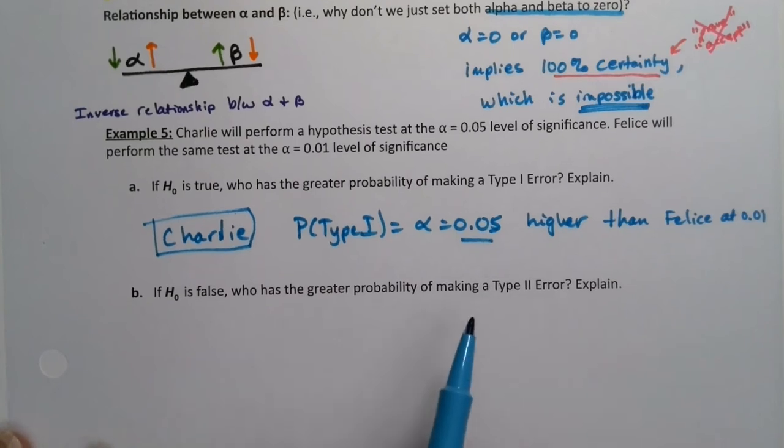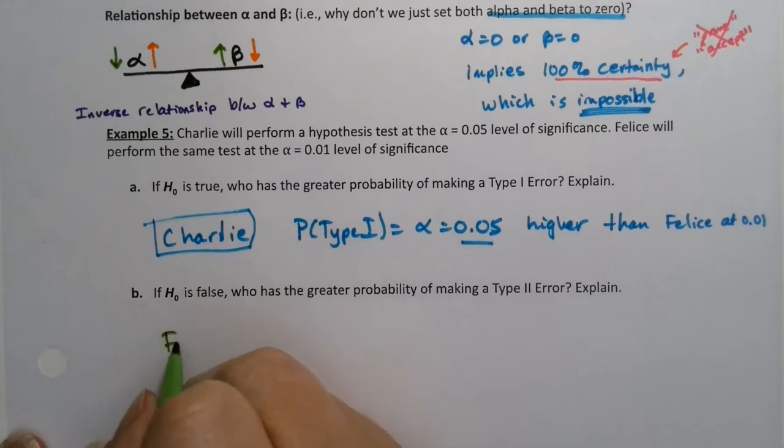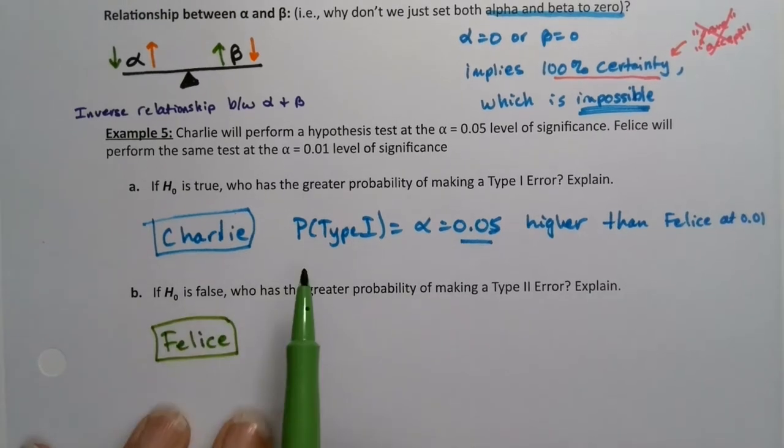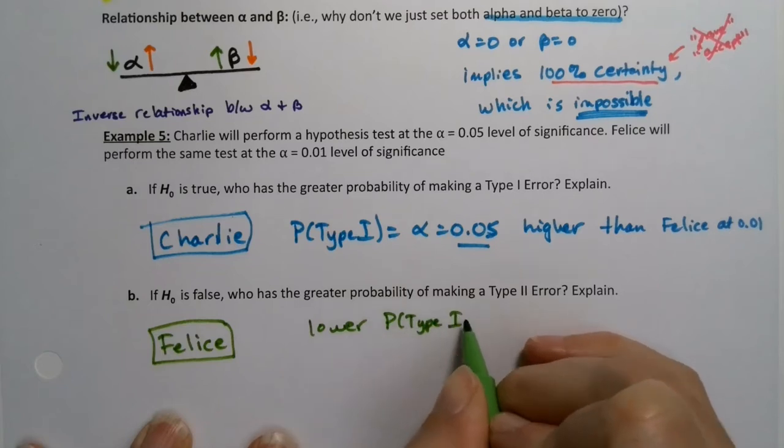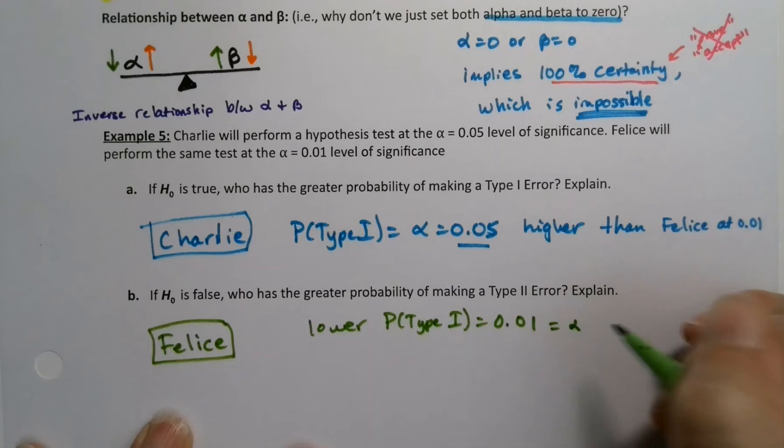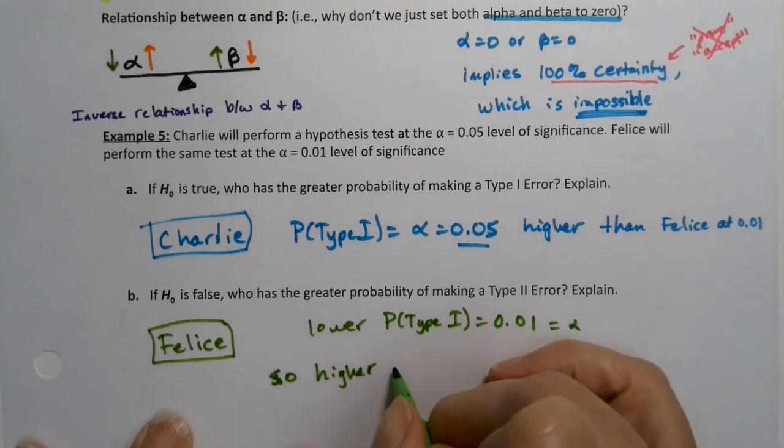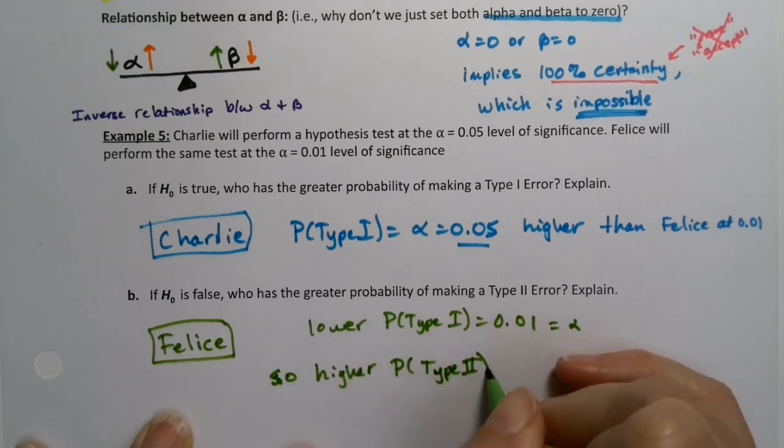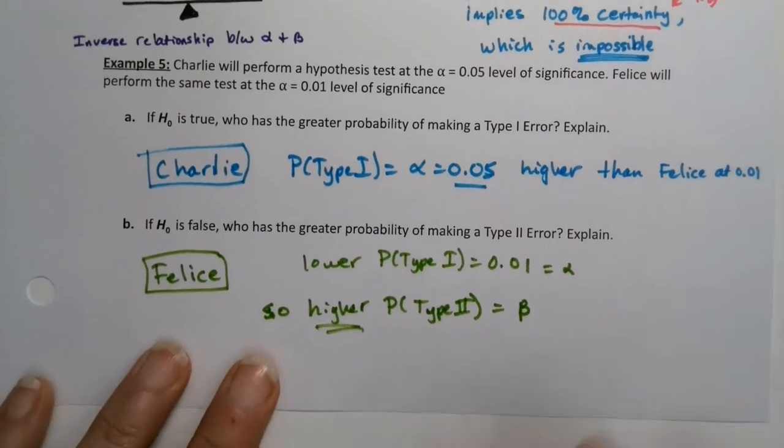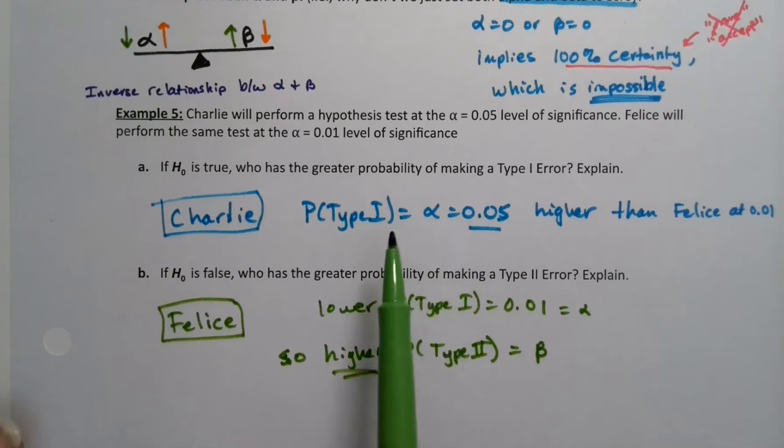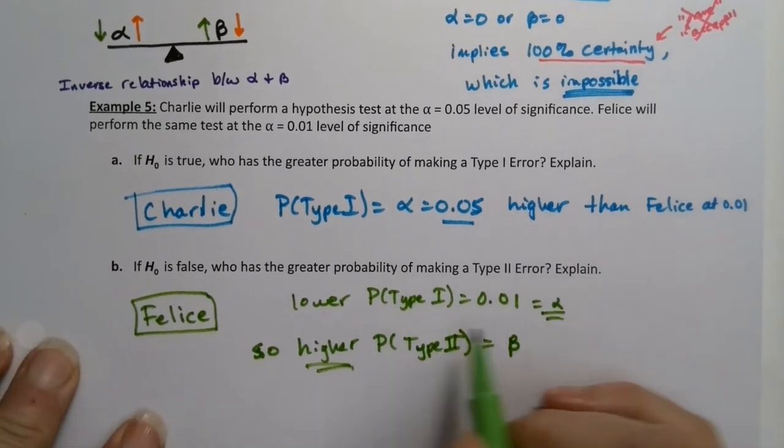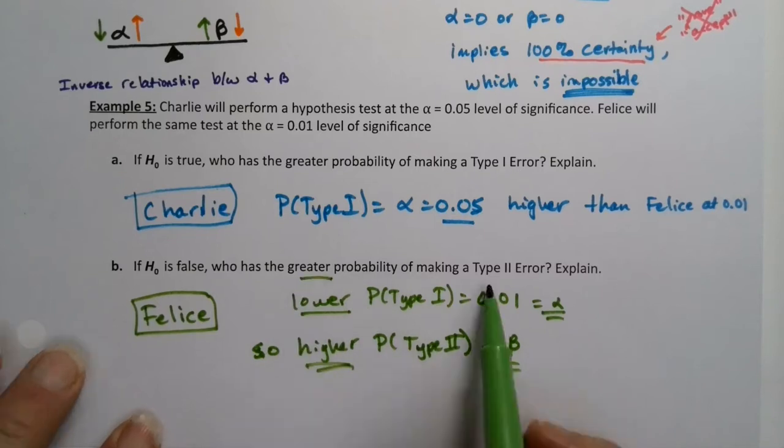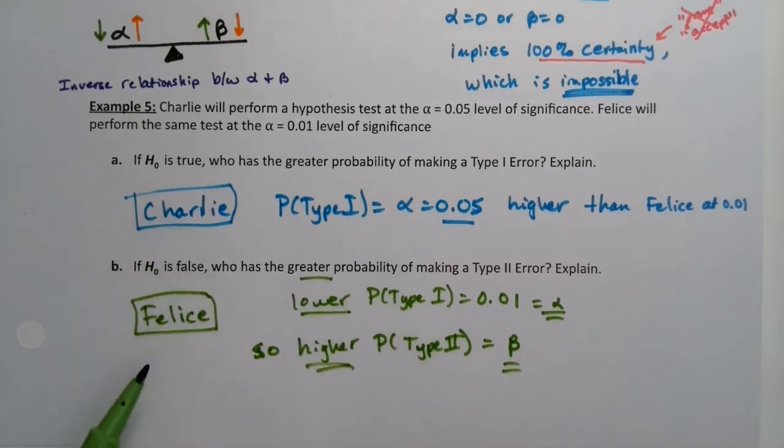But then who has the greater chance of making the Type 2 error? That would be Felice. It's a bit of an indirect relationship. So Felice has the lower probability of making a Type 1, right? Her Type 1 error probability is only 0.01. That's her α. So that means that she has a higher probability of a Type 2 error, which would be her β. We don't know what it is, but we do know that it's higher because α and β are on a teeter-totter together. So he has the higher α, so he's going to have the lower β. She has the lower α, so she's going to have the higher β. So she has a lower α, higher β. She's going to have the greater probability of making a Type 2 error. So he's more likely to do a Type 1 error, she's more likely to do a Type 2 error. α and β are on a teeter-totter together. They have an inverse relationship.